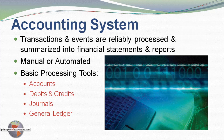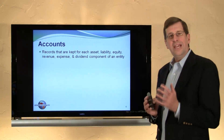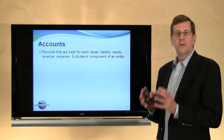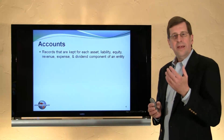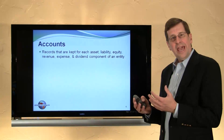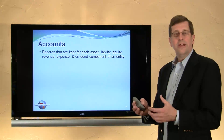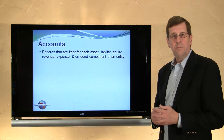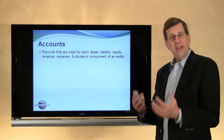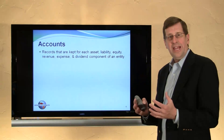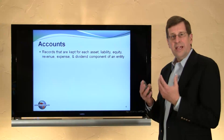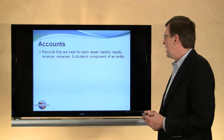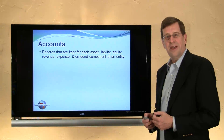Let's begin by considering accounts. Accounts are the records that are kept for each asset, liability, equity, revenue, expense, or dividend component of an entity. Assets, liabilities, and equity are found on the balance sheet. Revenues and expenses are found in the income statement. Dividends would appear on the statement of retained earnings. Net income is not really an account per se — it's simply the difference between revenues and expenses. These then are your six basic types of accounts.